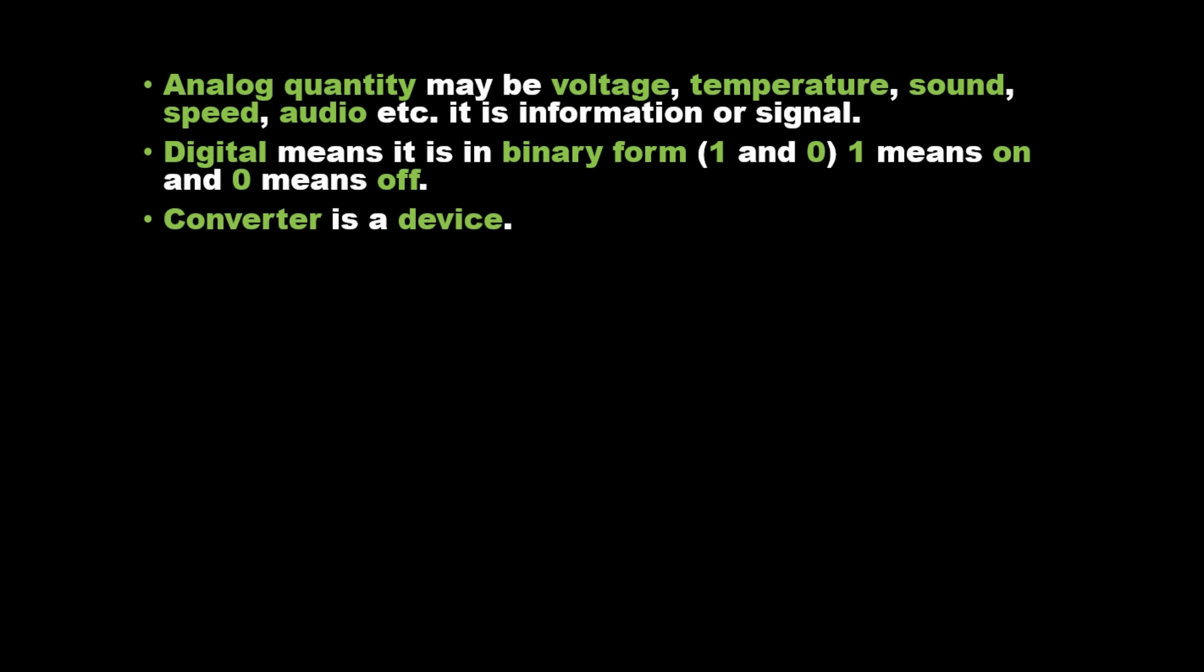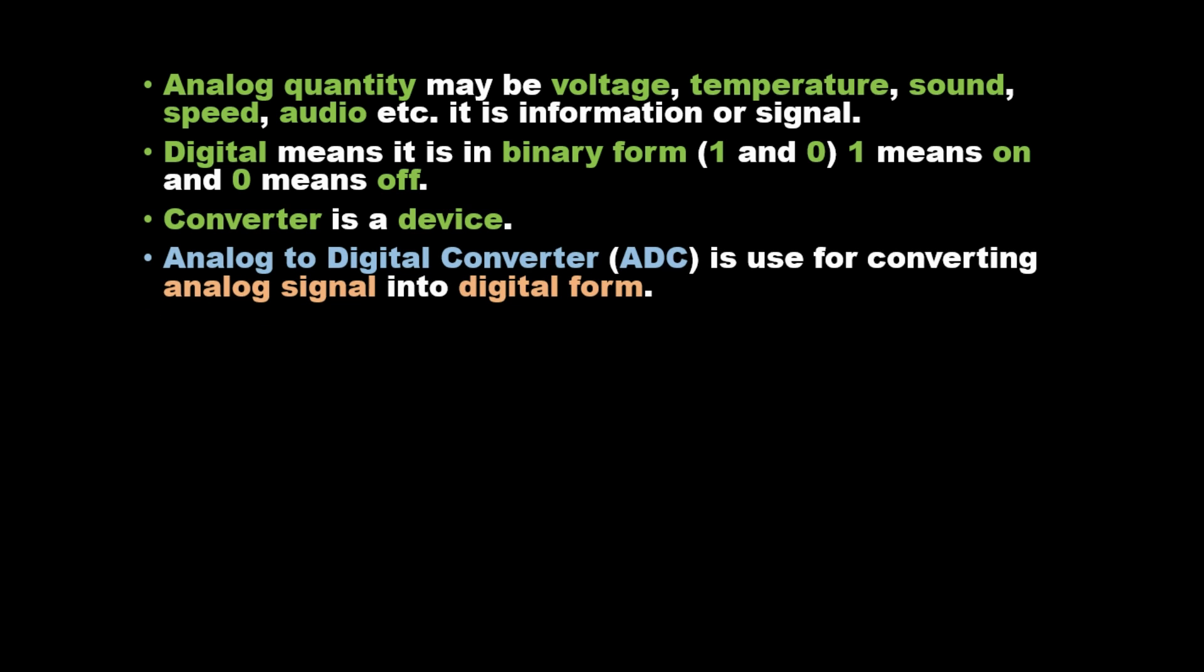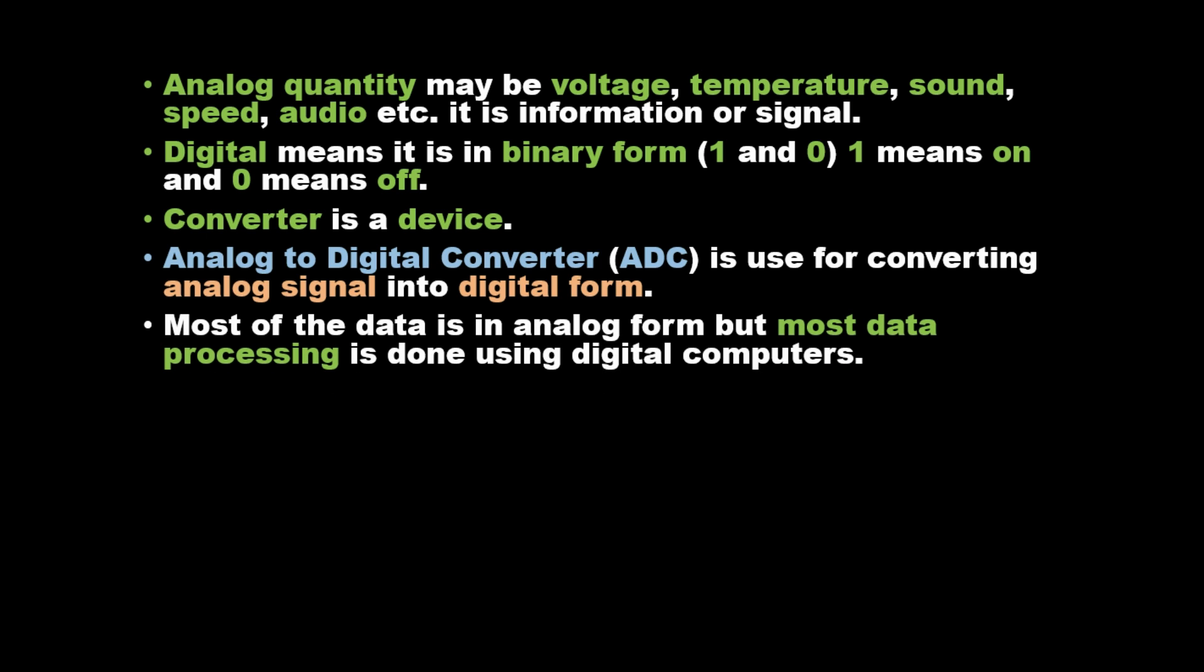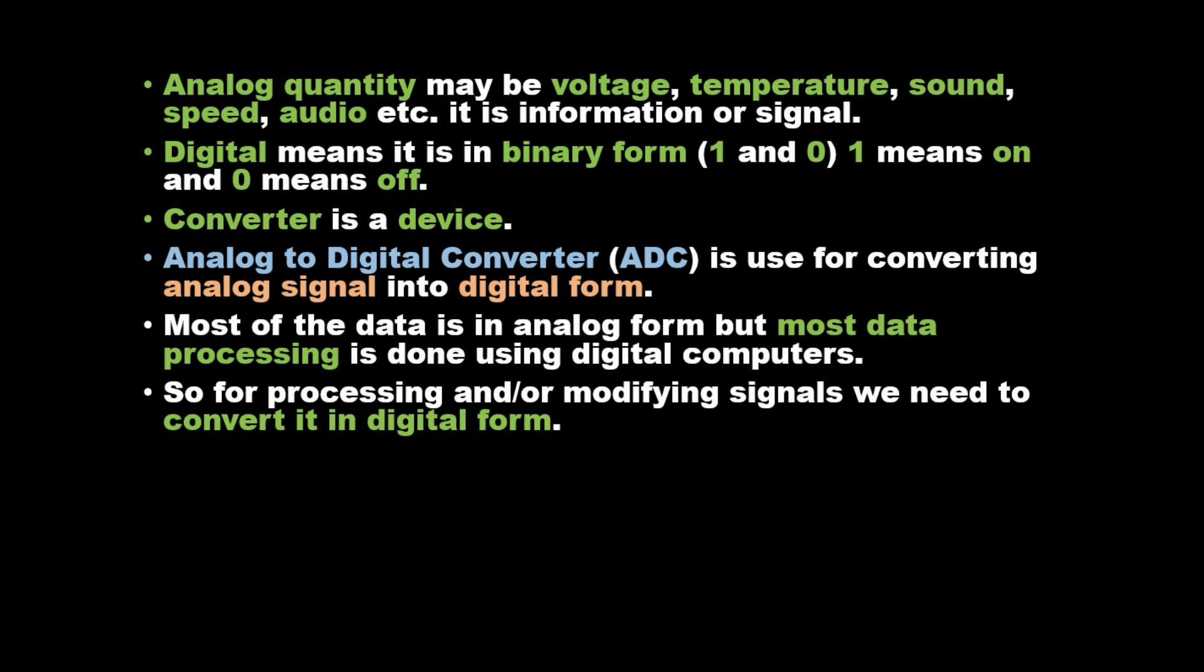Converter is a device. Analog to digital converter, ADC, is used for converting analog signal into digital form. Most of the data is in analog form, but most data processing is done using digital computers. So for processing or modifying signals, we need to convert it to digital form.